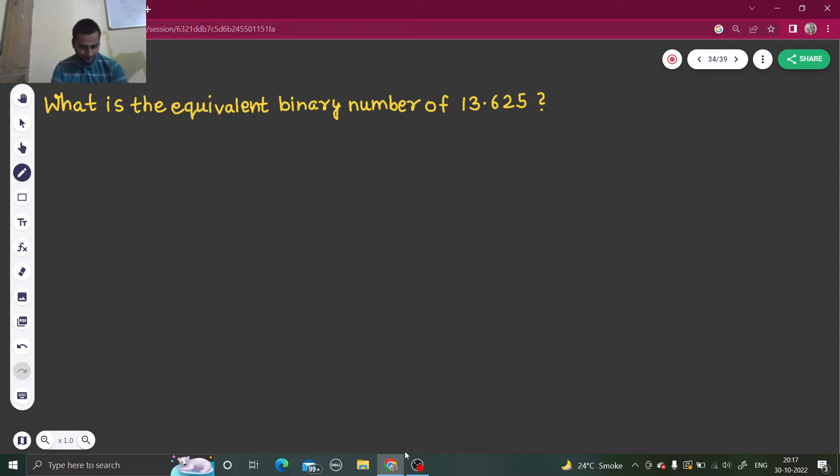First step is to take the number to the left of the point, which is 13. Find the equivalent binary expression of 13. Keep dividing by 2. Six times remainder is one, again three times remainder is zero, again one time remainder is one.